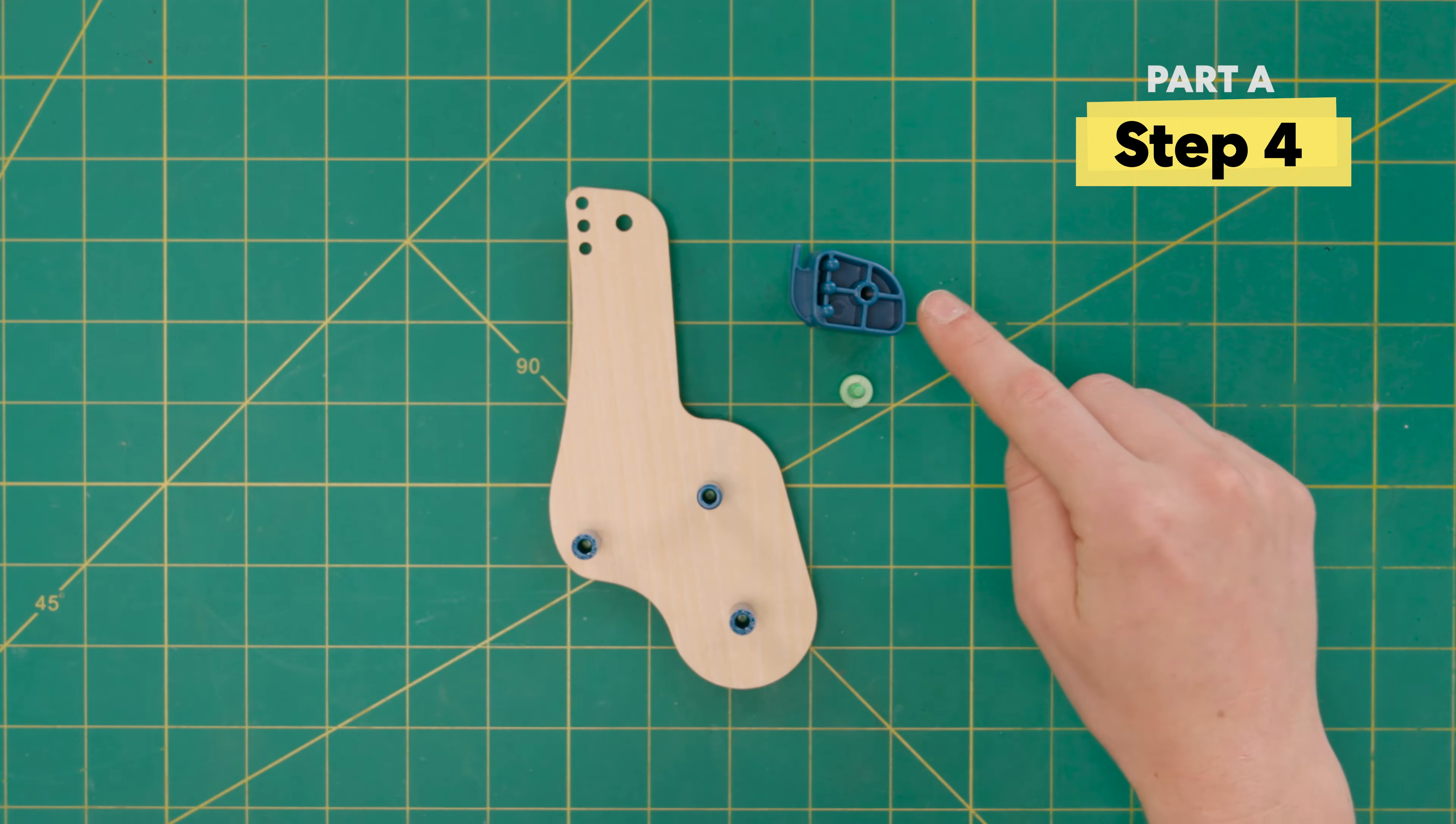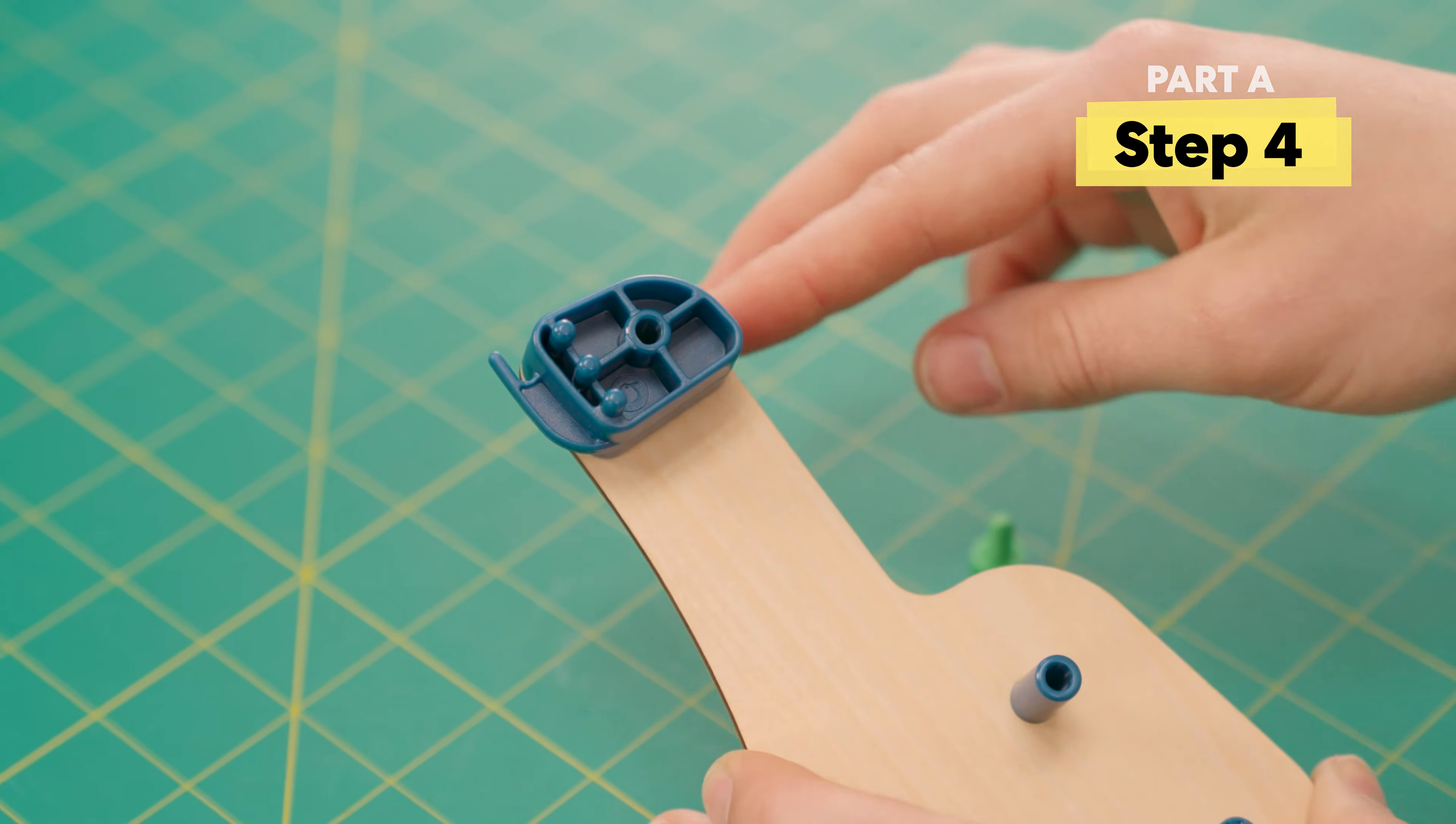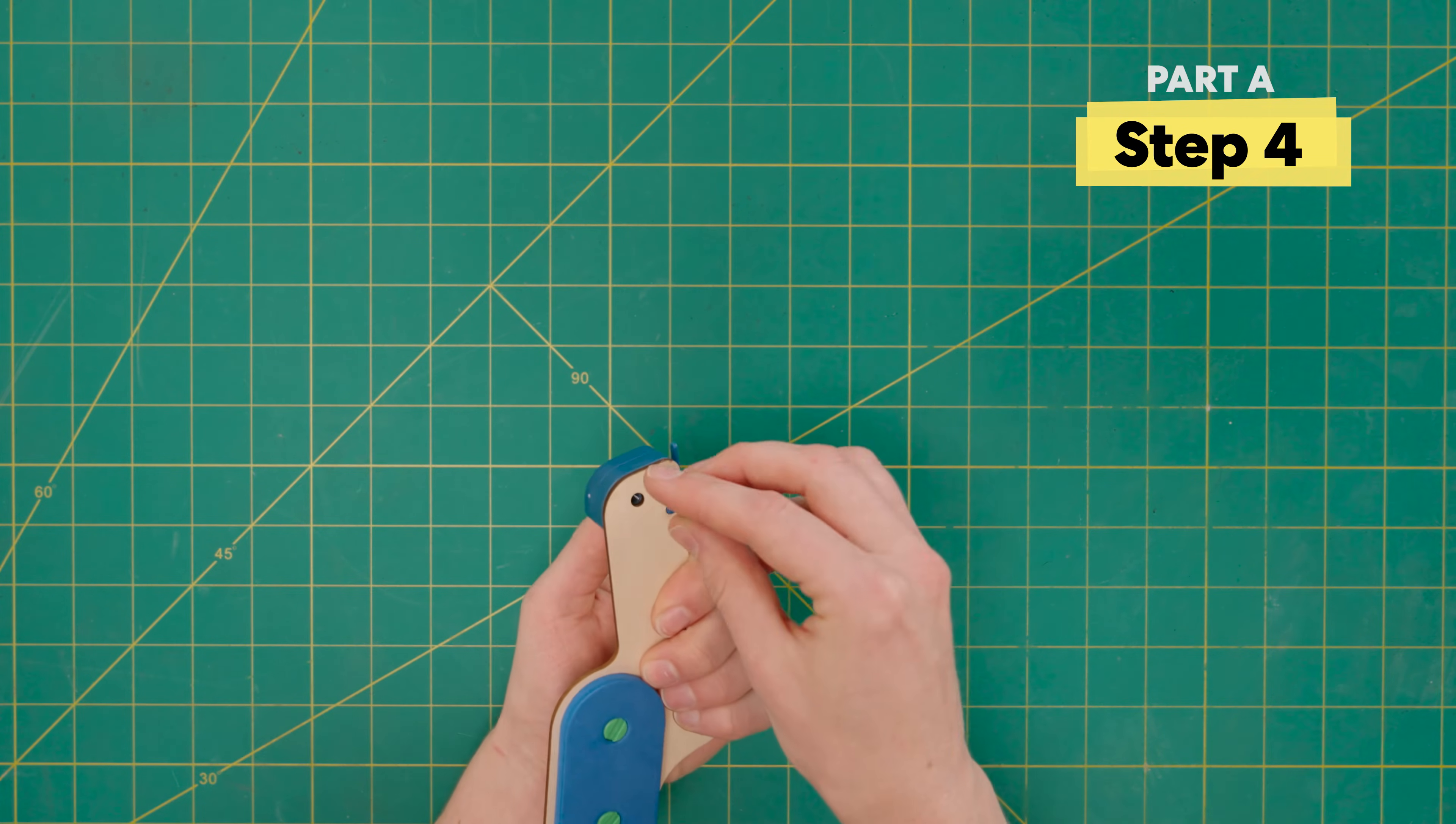Next, grab the blue front hook and place it right in these three pegs. It should line up with the edge of the wood. Then secure into place with a green bolt.